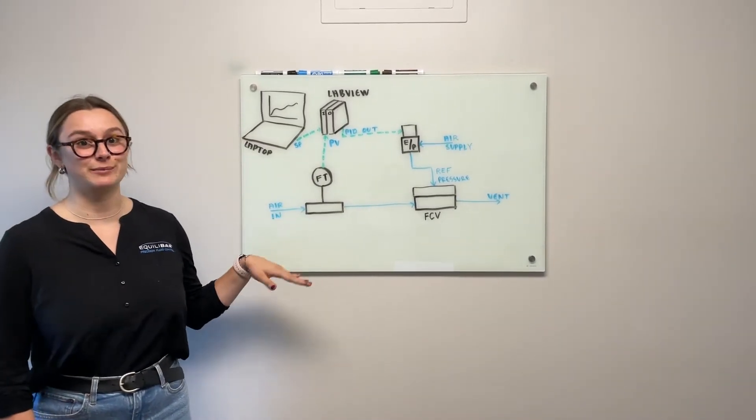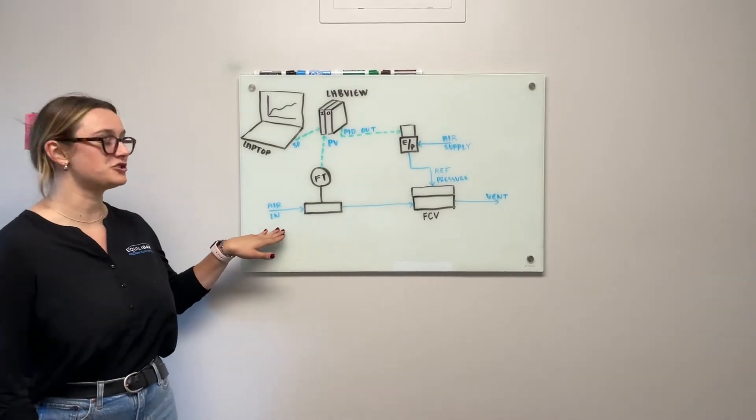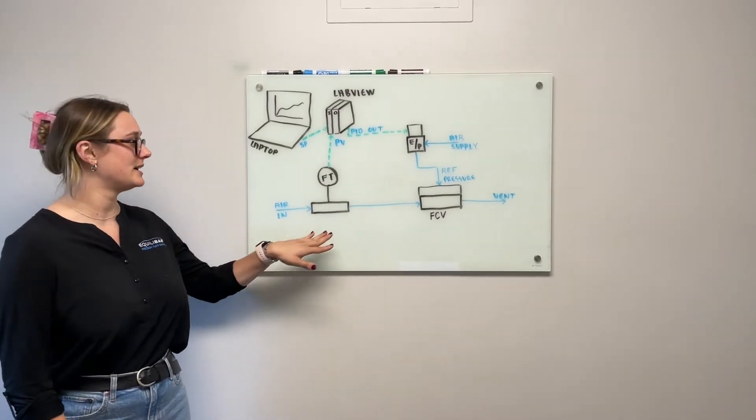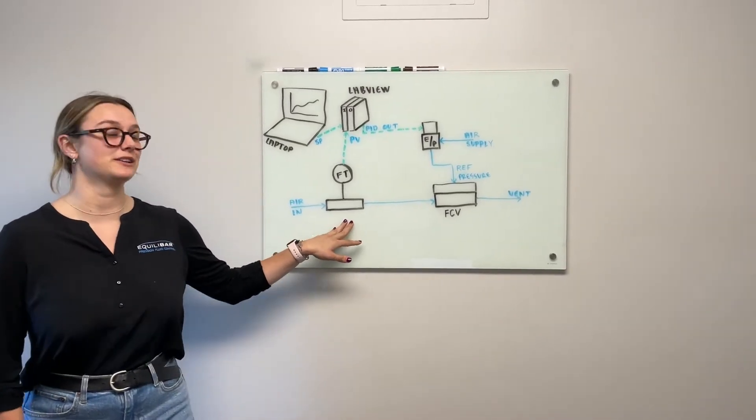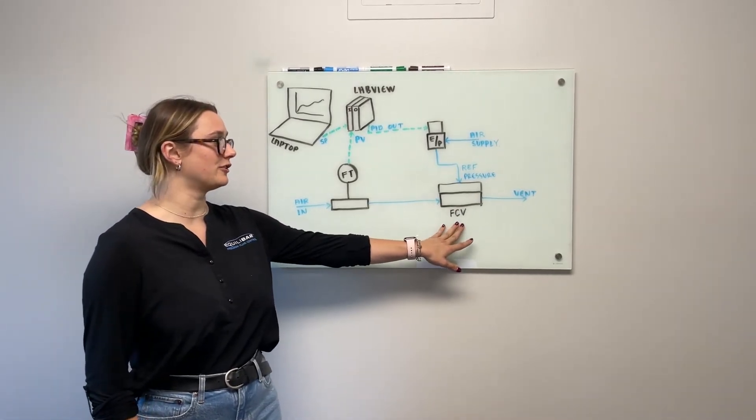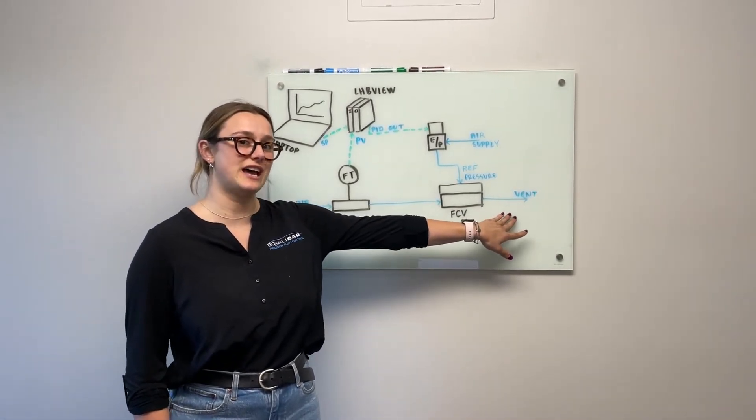I have a schematic here that's very similar to our lab setup. We have pressurized air coming in on the left, passing through our thermal flow meter, through our Equilibar flow control valve, and ultimately venting to atmosphere.